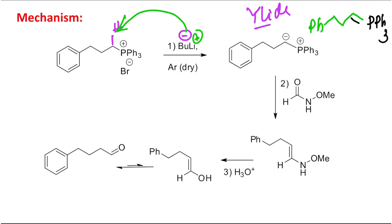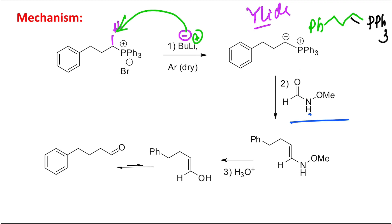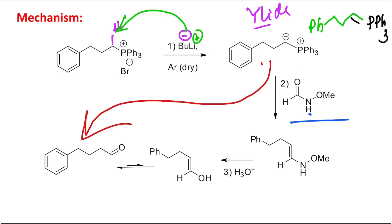Now the ylide reacts with this Weinreb amide. The Weinreb amide reacts with any carbanion derivative — for example, butyl lithium or RMgX — to produce a ketone or carbonyl derivative. Since I have taken a formic acid derivative here, it will result in an aldehyde. This is a very easy concept if you understand it, and you can see that it will directly be converted into this aldehyde.